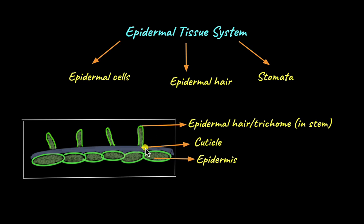The epidermis also has tiny projections or extensions called epidermal hair. In stems, this epidermal hair is called trichome, and in roots it is called root hair. The function of root hairs is to increase the surface area of water absorption — the more root hairs there are, the more area there is for water to be absorbed into the plant. In stems, the function of the trichome is to protect the plant from damage, like from herbivores eating the plant.